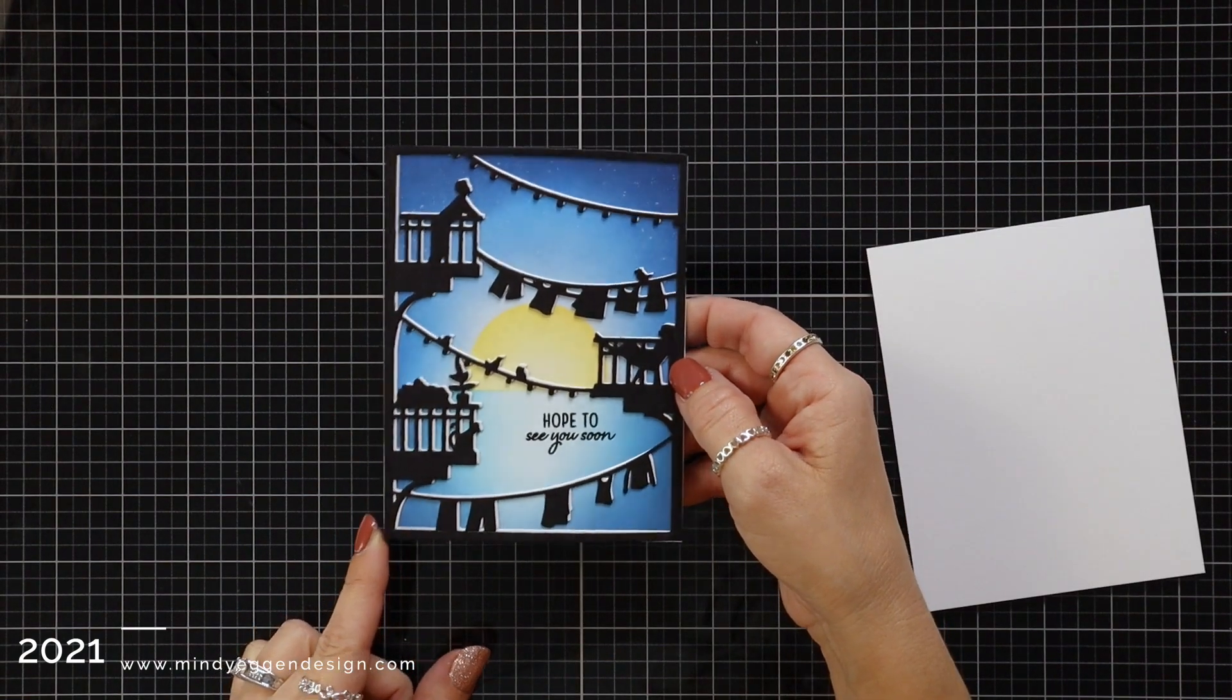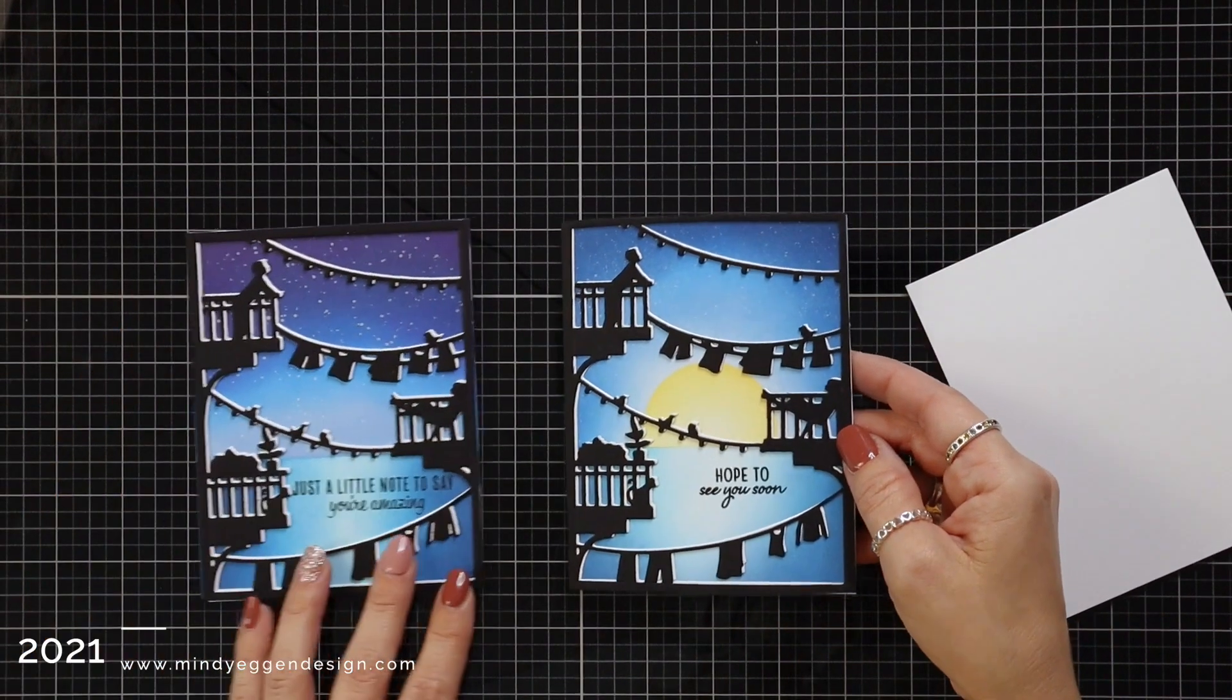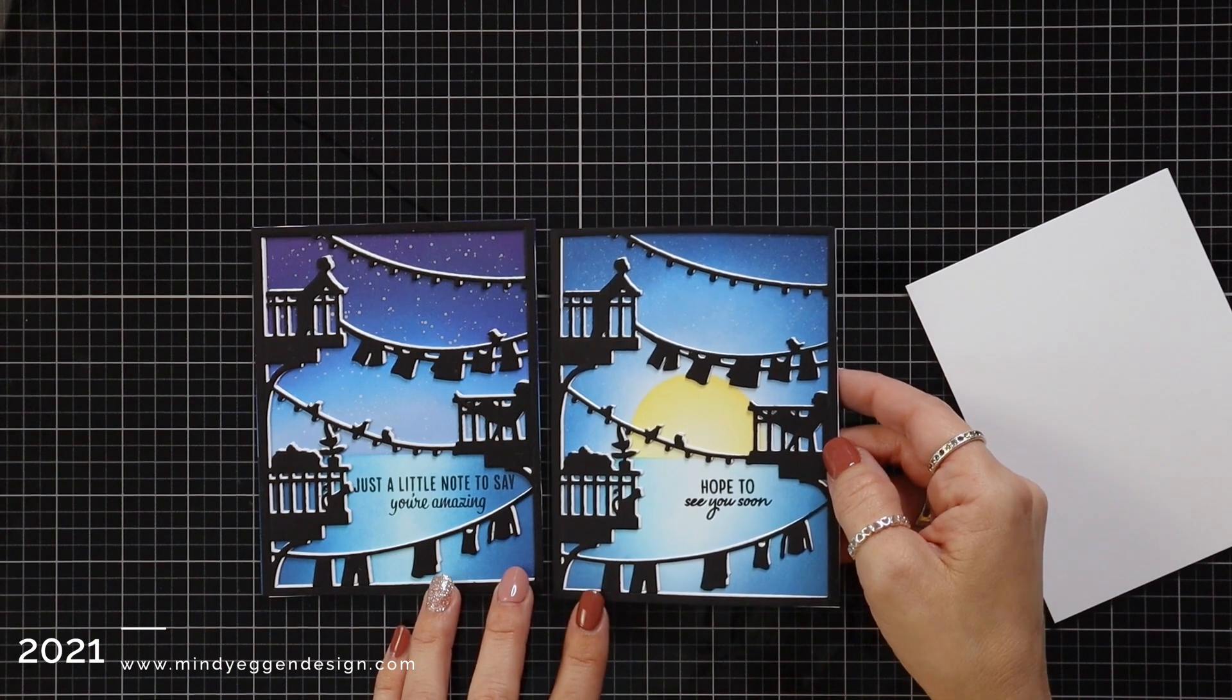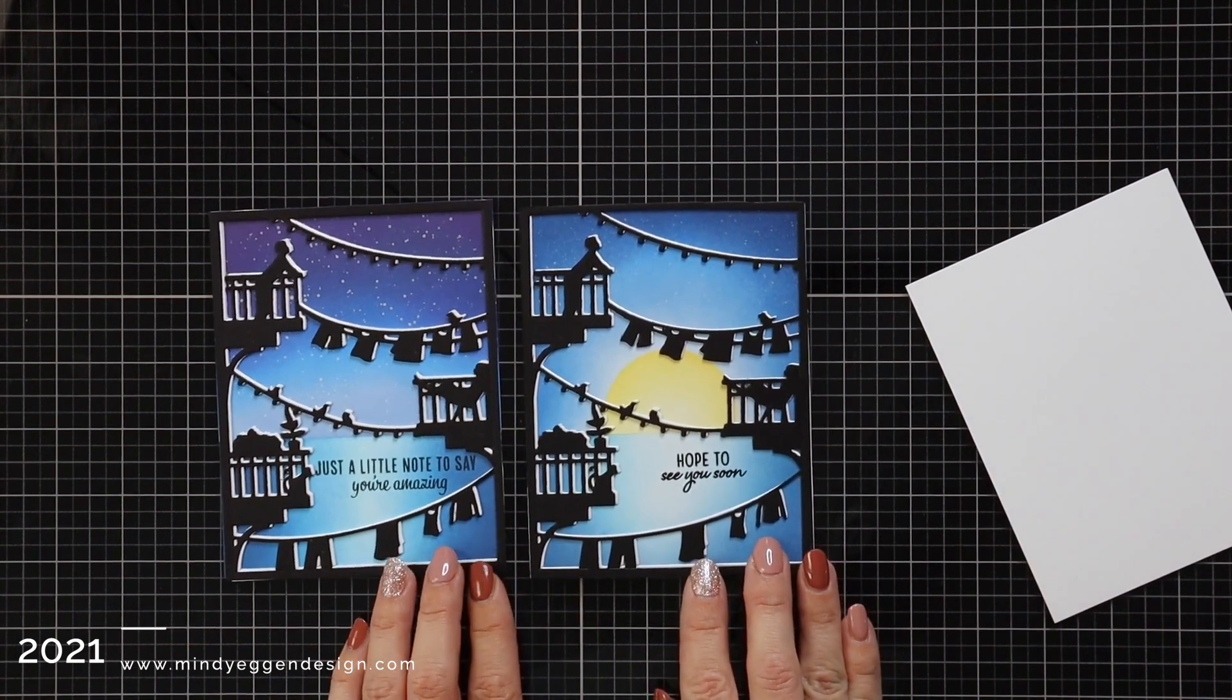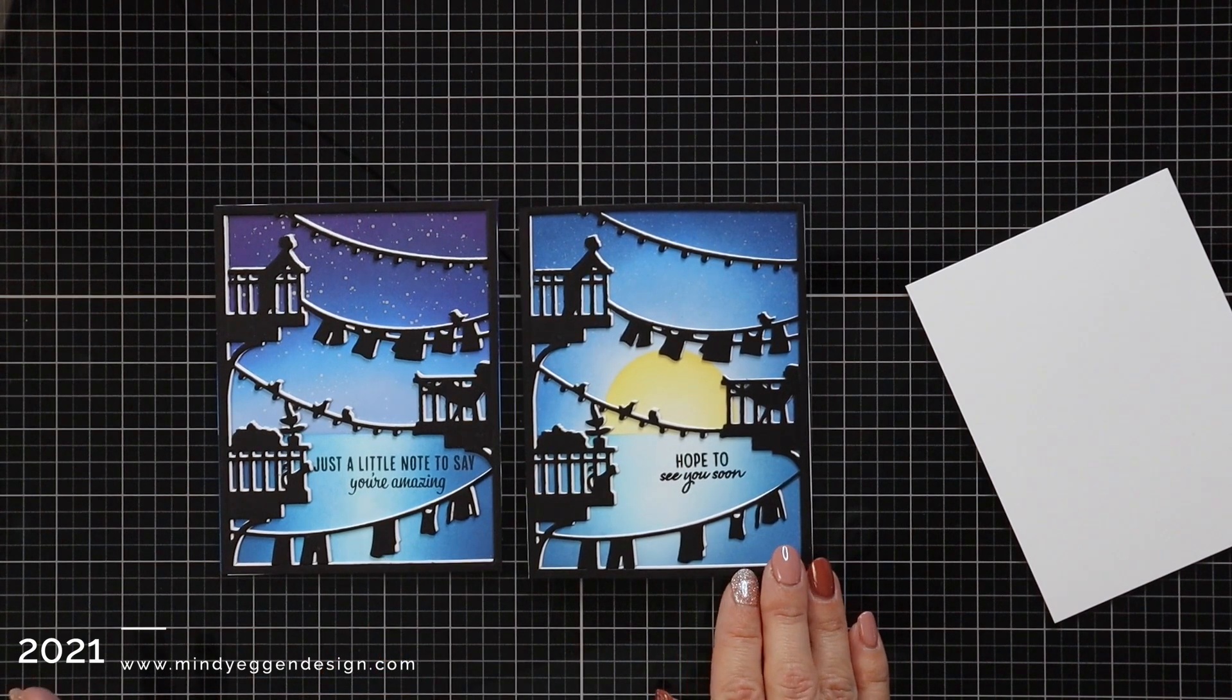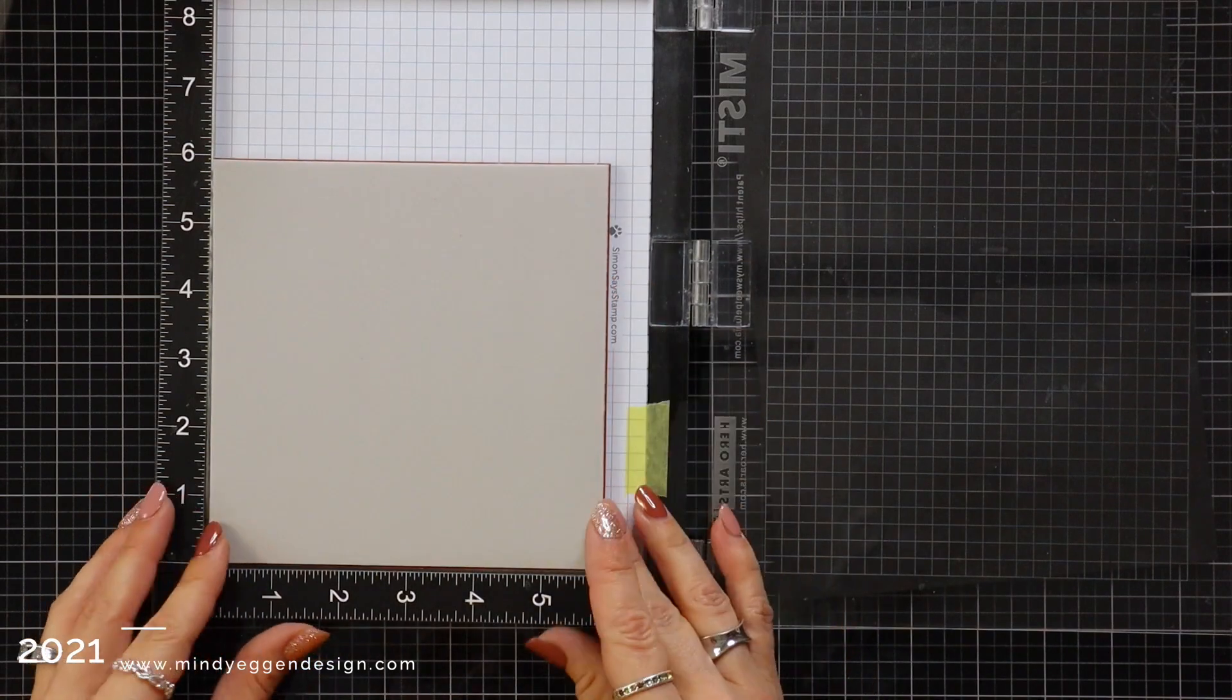This is the card I created today in the video, and here is a look at the card I originally created for my countdown post. Just by changing up your colors, you can deepen your sky, change up those colors, make it a daytime sky. But I really loved having the moon or it could be a sun and adding that highlight down the center of the water.